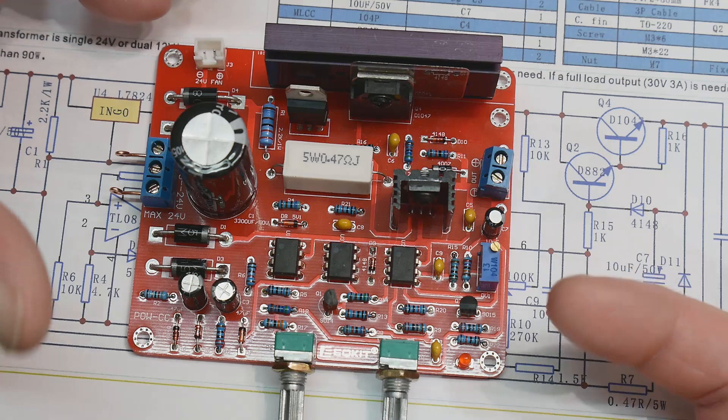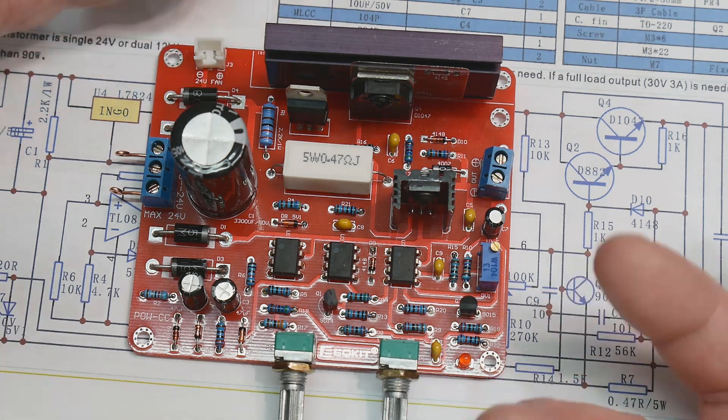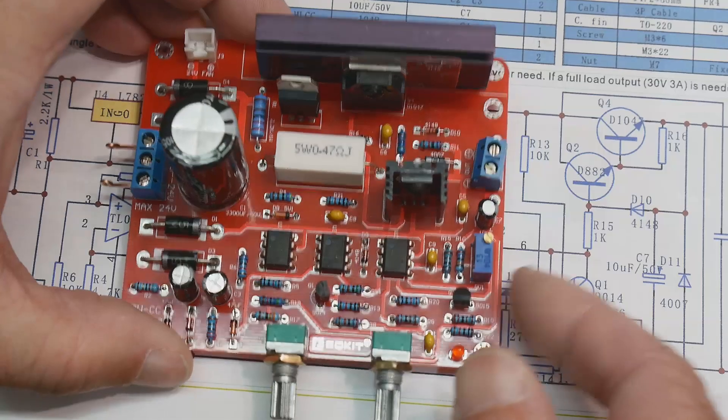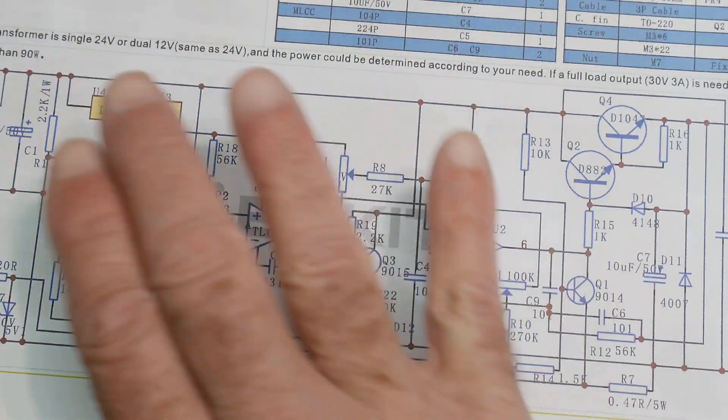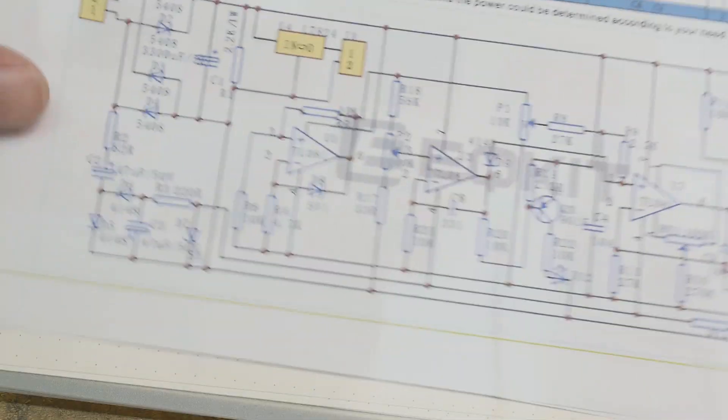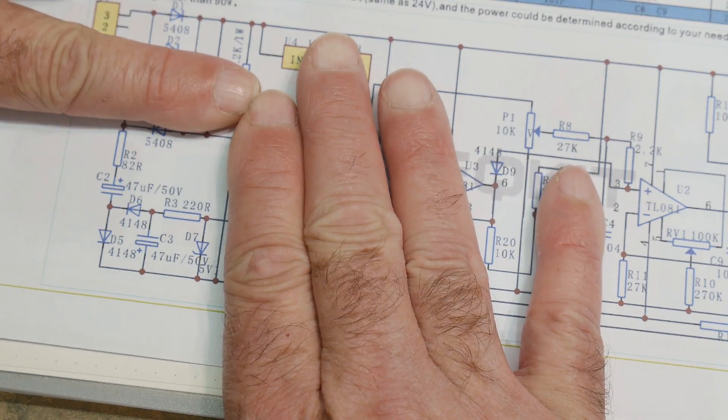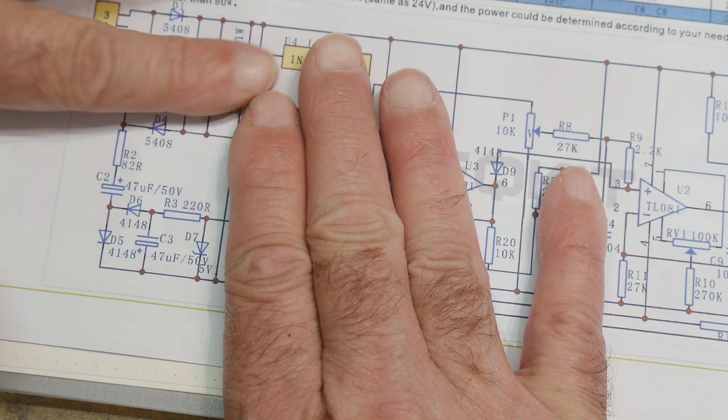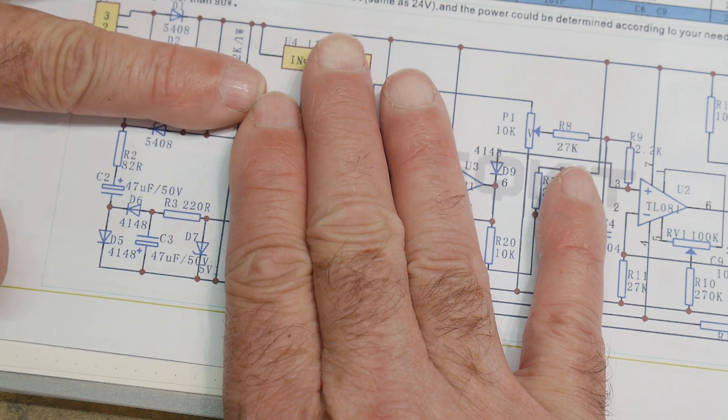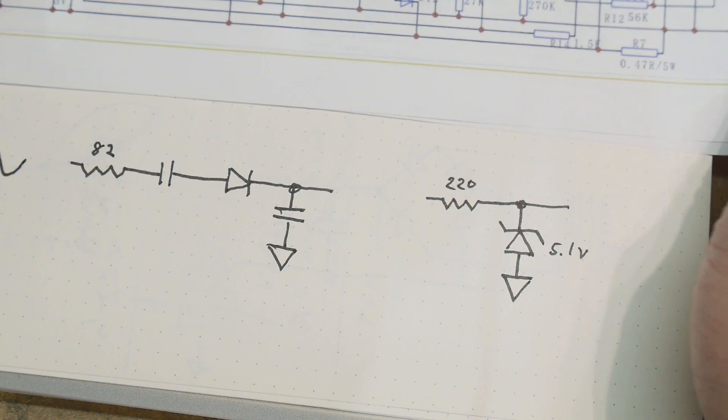So we've already generated 30 volts. Now we need to generate minus 5 volts to operate the op amp. So how do we do that? And that's going to be this little section down here at the lower left section of the schematic. So let's take a look at that.